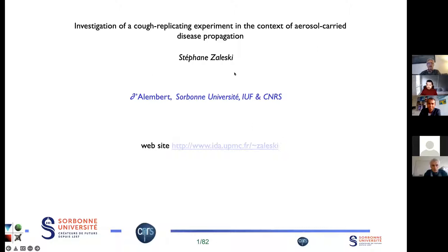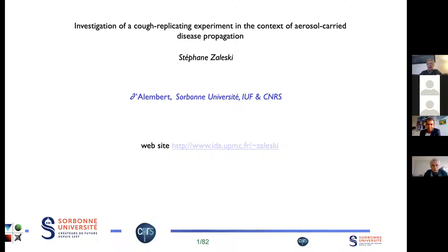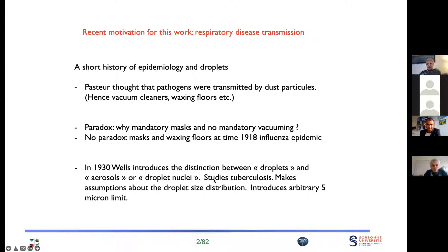I'm going to talk about a cough replicating experiment — a type of experiment that allows us in the lab to study the formation of droplets. This is very important in the context of the current pandemic, but also more generally in the context of respiratory disease transmission, which is a long-term problem. This problem has involved atomization and log-normal distributions for a long time. I'm very pleased to be in the Kampé de Fériet laboratory and to talk about something essentially linked to turbulence and its statistical analysis, to which Kampé de Fériet was a great precursor.